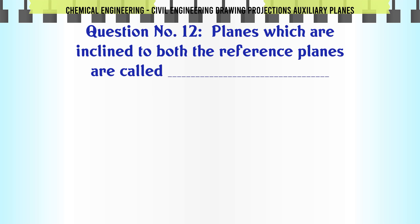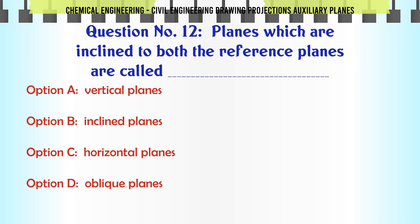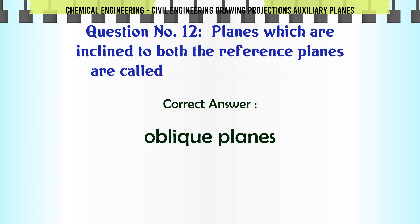Planes which are inclined to both the reference planes are called: A) Vertical planes, B) Horizontal planes, C) Oblique planes. The correct answer is Oblique planes.